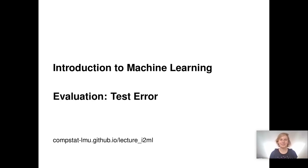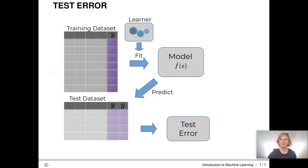Welcome to our new unit on performance evaluation in machine learning. In this unit we want to talk about the test error other than the training error. The test error is computed on new unseen data, data which was not used for training. This is then called test data.